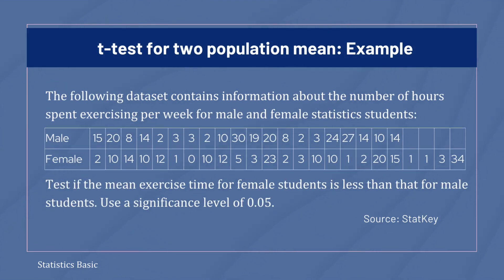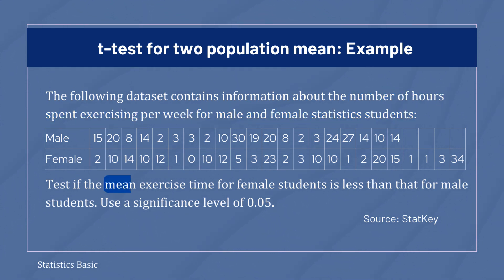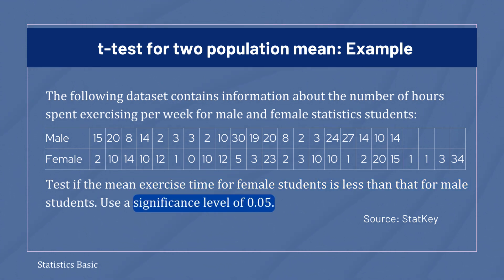Let's consider the following example, where the amount of exercise for a sample of statistics students are given, and a claim is made that the mean exercise time for female students is less than the mean exercise time for male students, and the significance level alpha is set at 0.05.